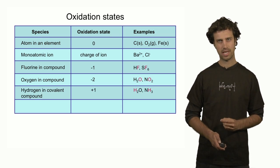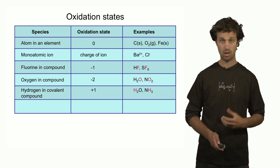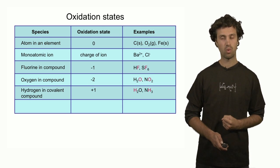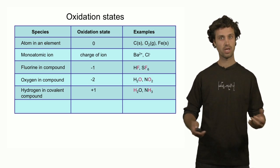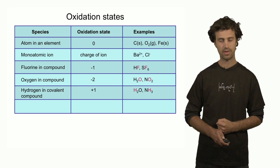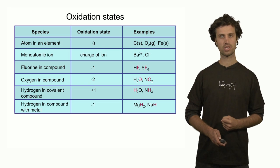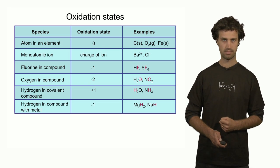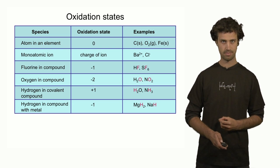Hydrogen has oxidation state plus one when it's part of a covalent compound. So both the hydrogens in water have oxidation state plus one, and the hydrogens in ammonia also have oxidation state plus one. However, when hydrogen is bonded to a metallic element, it has oxidation state minus one. Examples include magnesium hydride and sodium hydride. In addition to these rules, there are two more rules that are going to be very helpful in determining the oxidation states of atoms in compounds.